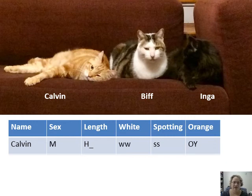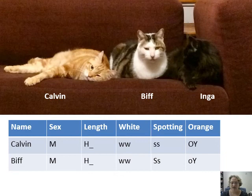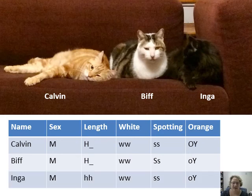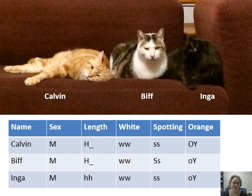For Biff — also male, short hair, not fully white. For spotting he's mostly pigmented with a good amount of white, so he's heterozygous Ss. For orange he's producing black pigment, so he gets little o with the Y. Finally, Inga is male with long hair — homozygous recessive hh. He's also not fully white, and he's fully pigmented all black, so he gets two little s's. Like Biff, he also has black pigment, so he gets little o with the Y. Hopefully this helps — if you have any questions please post in the Discord chat and we'll help you out. See you later!